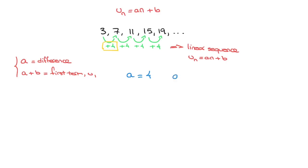And we also have a plus b equals to the first term. Well, looking at the sequence here, we can see that the first term is 3. So a plus b must equal to 3. But since we know that a is equal to 4, that turns into 4 plus b equals to 3.